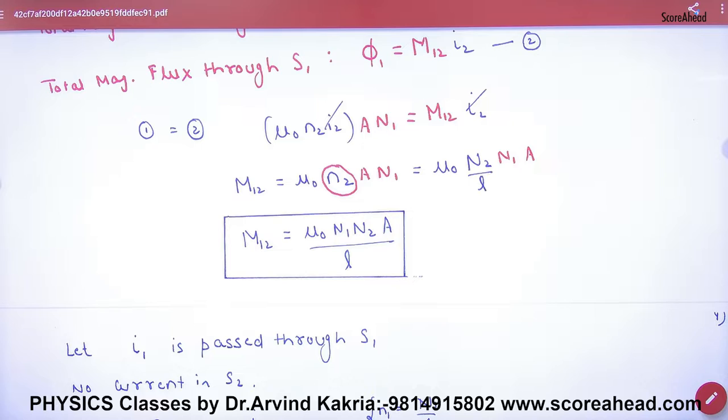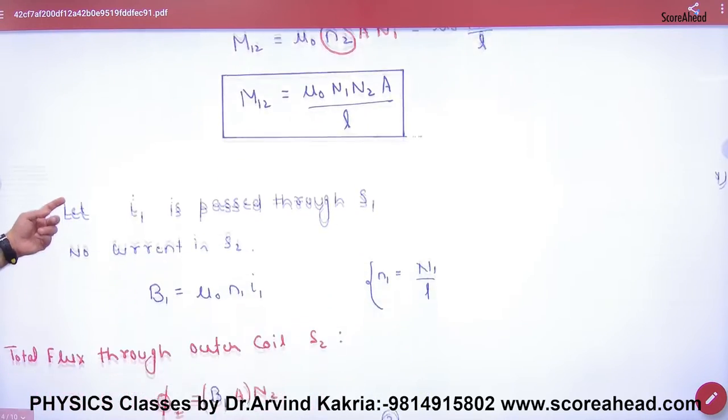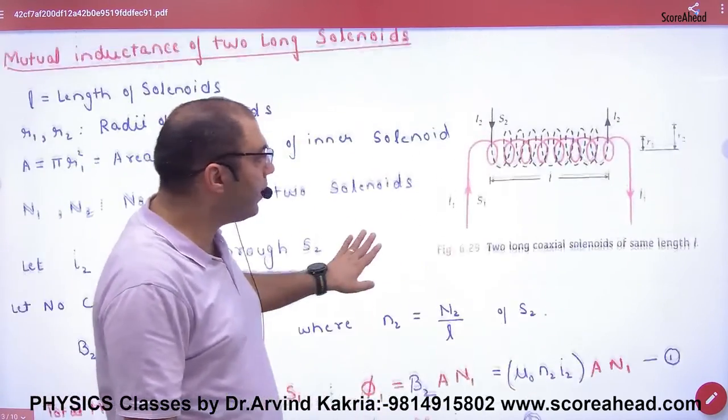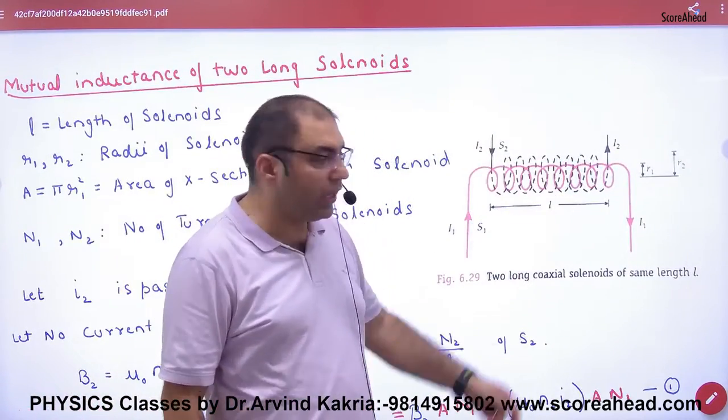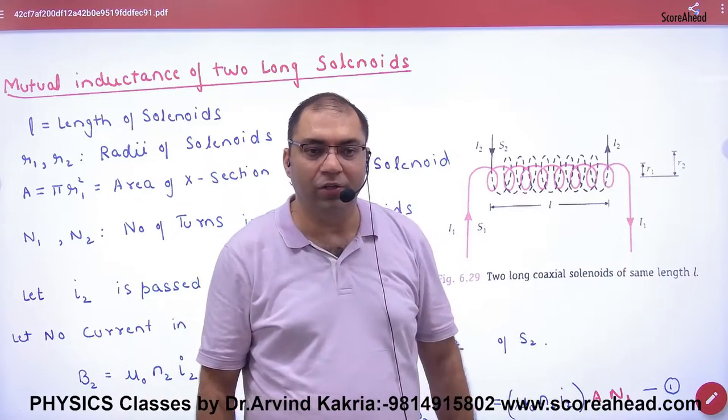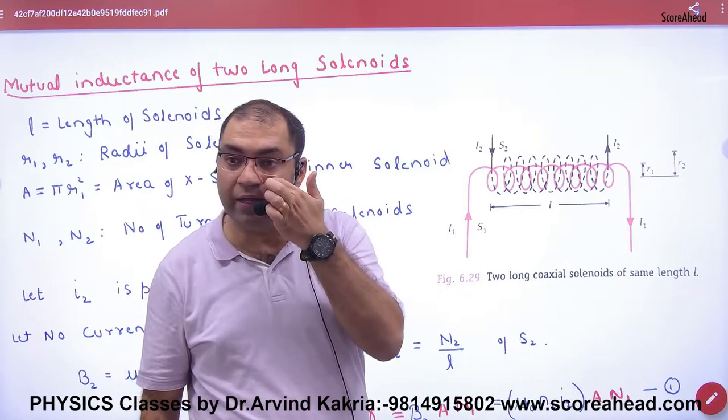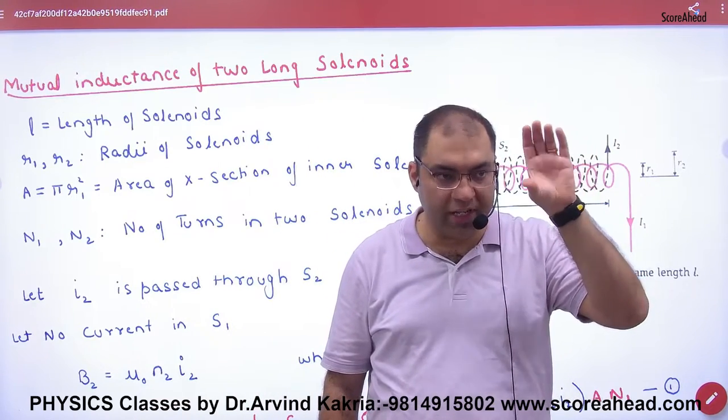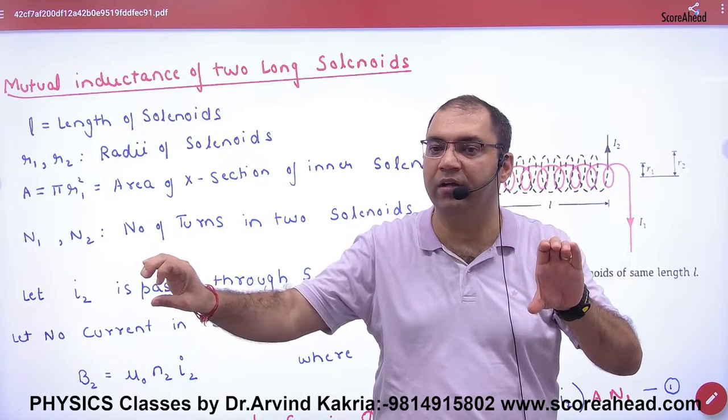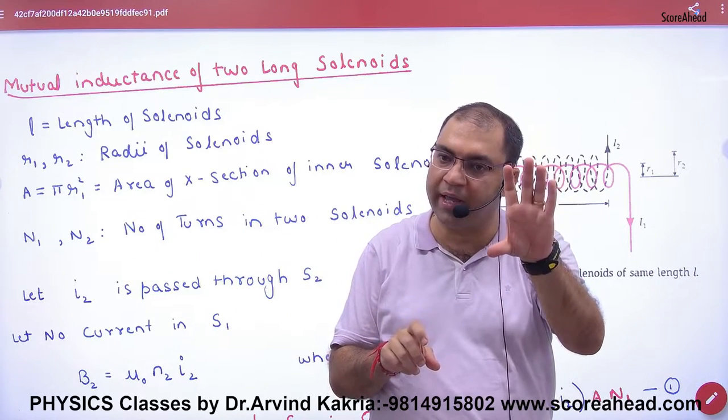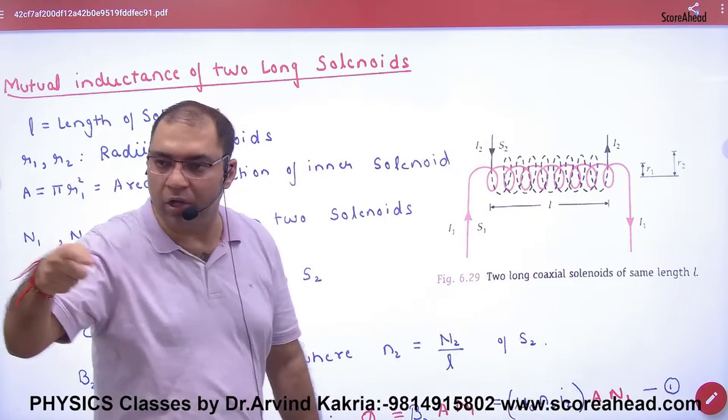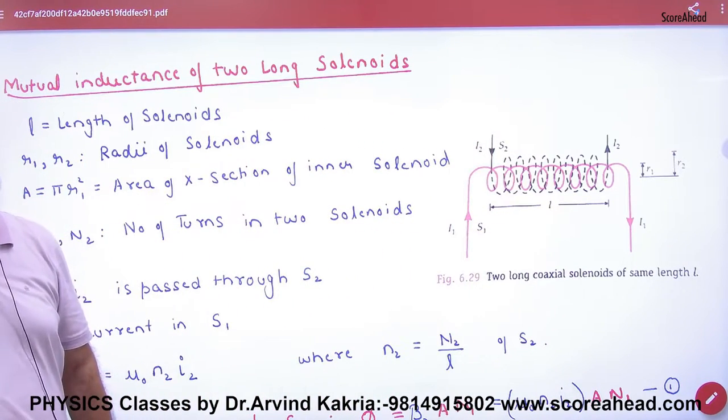One more thing: when you put area in this formula, the two inductors have different areas. Length is same, area is different. What area will you put? In numerical problems, use the common area. If one coil has large cross-section area and one has small, the common area is the smaller one. Put the small area, which is common, because mutual inductance occurs in the common portion.